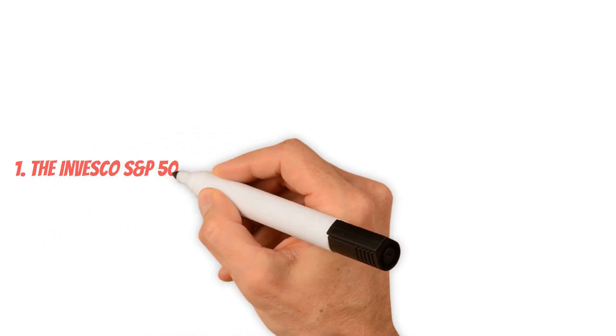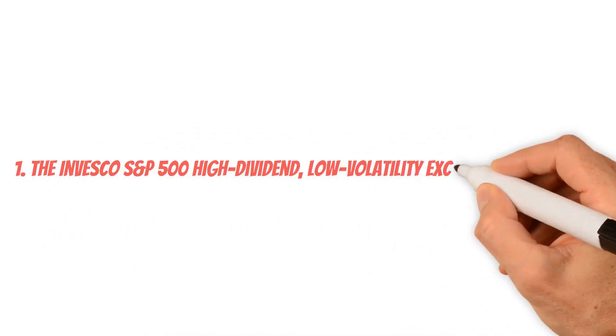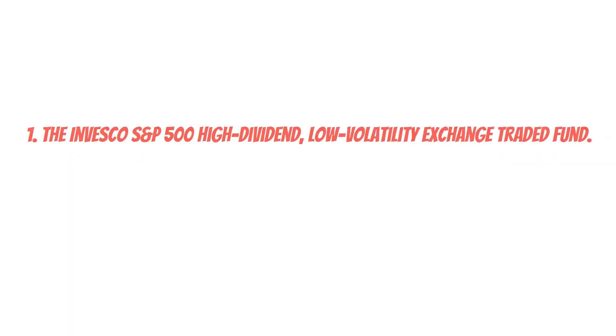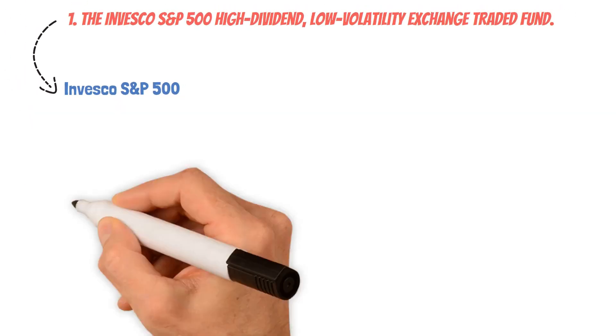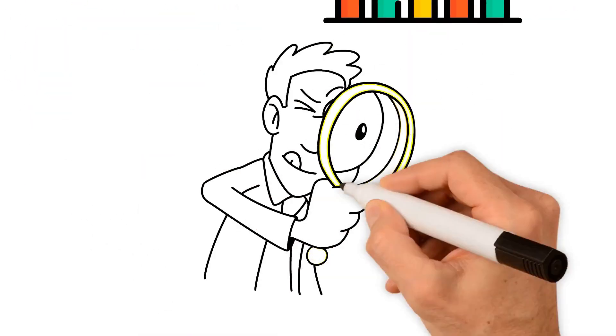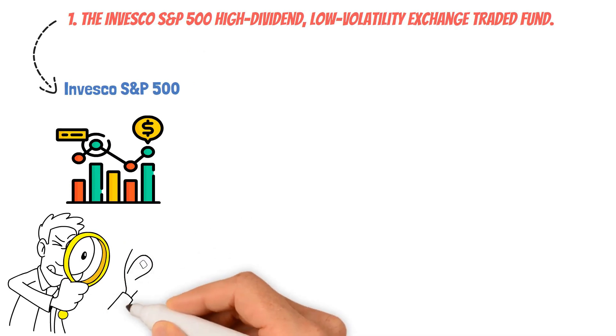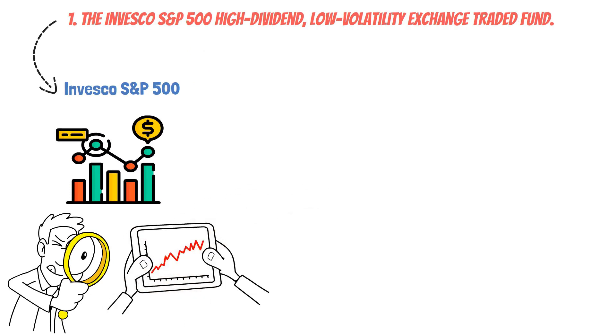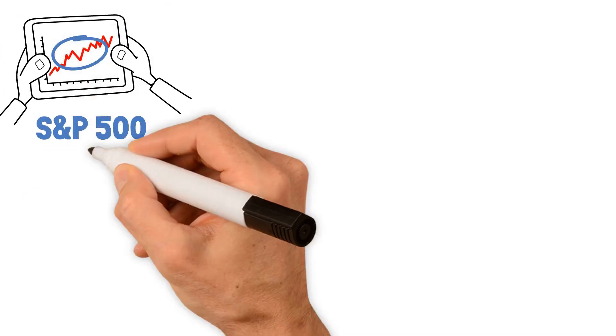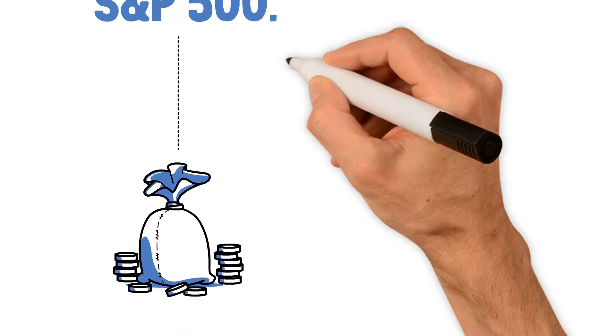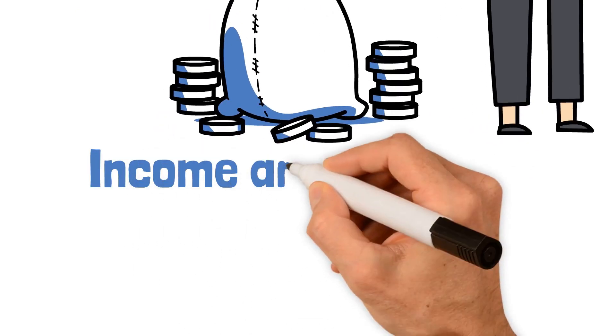Number one, the Invesco S&P 500 High Dividend Low Volatility Exchange Traded Fund. As the name implies, the Invesco S&P 500 High Dividend Low Volatility ETF offers investors a unique opportunity to capitalize on a carefully curated selection of stocks from the S&P 500. The ETF is designed to focus on stocks that deliver the highest dividends while maintaining low volatility levels, providing investors with the best of both worlds: income and stability.